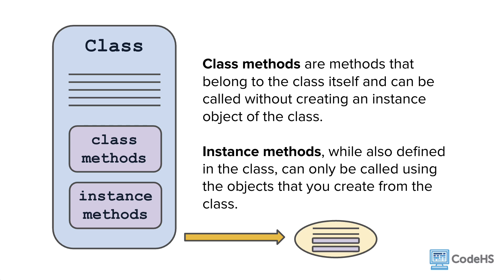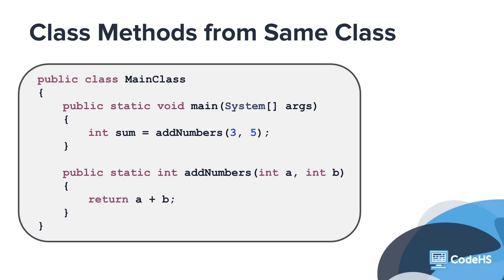Let's look at an example of a class that is similar to what you've already been working with. Here is a class called MainClass with a main method and a custom method called AddNumbers. This custom method is an example of a class method because you can call it in the main method without needing to create an object first.